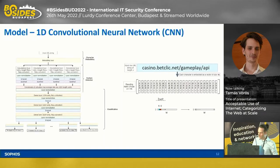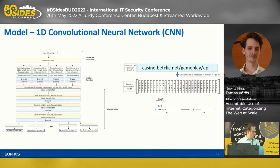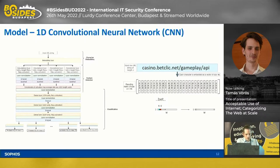Now that we have our data and labels, the only thing we need is our model. We propose to use a 1D convolutional neural network for this task. On the left we have the architecture of the model. It has fundamentally three main blocks: the character embedding, then the feature detection part, and finally the classification.